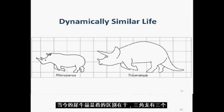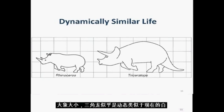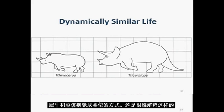Triceratops was similar in appearance to a present-day rhinoceros, with the most notable difference being that Triceratops had three massive horns on its head and it was much larger. Triceratops grew to 8 meters in length and its mass was about 9 tons, so it was similar to an elephant in mass. Despite its elephantine size, the Triceratops seems to be dynamically similar to a present-day white rhinoceros and should have galloped in a similar manner. It is difficult to explain how such a large animal was so athletic unless gravity was lower.